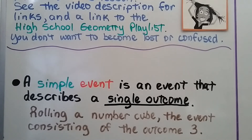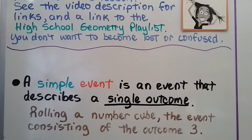A simple event is an event that describes a single outcome. It would be like rolling a number cube — one die — and the event consisting of the outcome three. That's a single outcome; we're just trying to get a three.